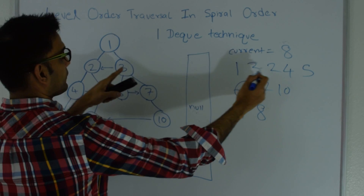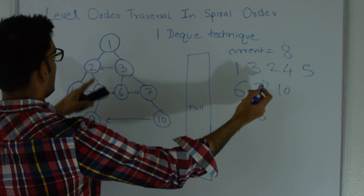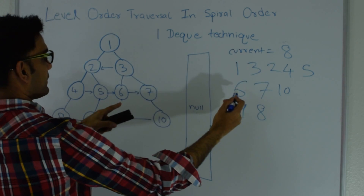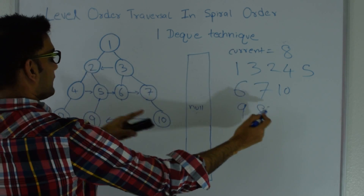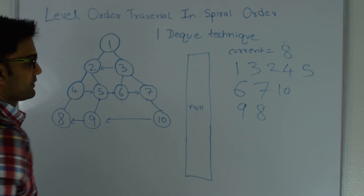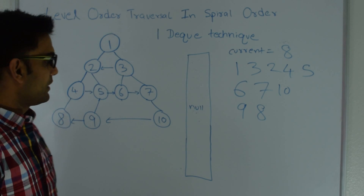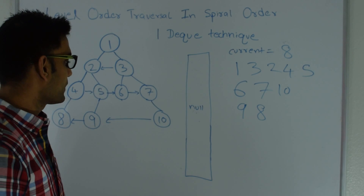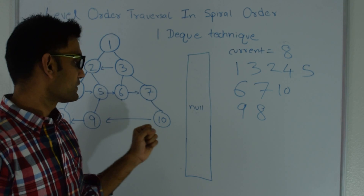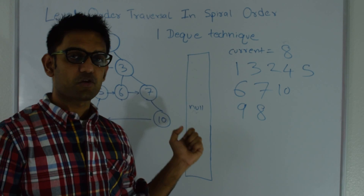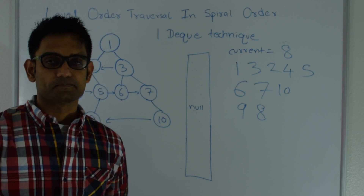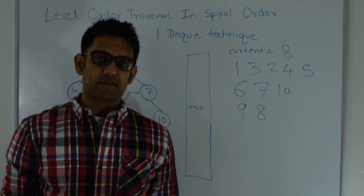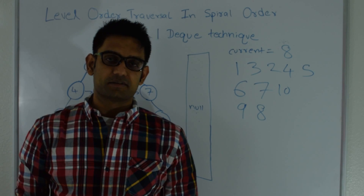The output is: 1, 3, 2, 4, 5, 6, 7, 10, 9, and 8. We stop looping as soon as the size of the deque becomes 1. Next let's look at the one-queue-and-counter technique.